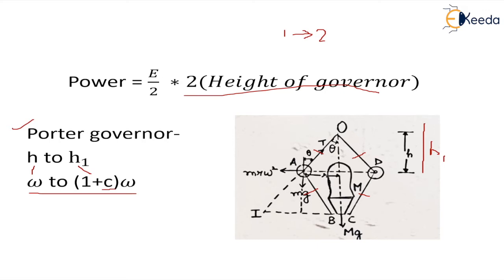That means if initially the governor is at some position, let's say H, and from that position H to H1, some force is being applied which is denoted by capital E. Once the governor has reached that equilibrium position, the application of force stops and it becomes 0. So the mean force becomes E plus 0 by 2, which is E by 2, into the displacement of the sleeve.